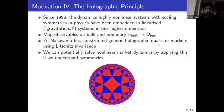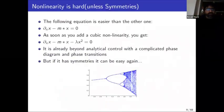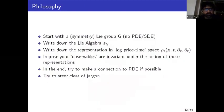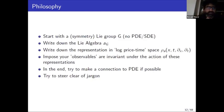What I do is start with a symmetry group G, write down its Lie algebra, and then write down what that Lie group is doing to log price-time space. I impose that observables are invariant under the action of these representations and see what leverage we can get by just using symmetry groups, without looking at PDEs and SDEs in the first place.